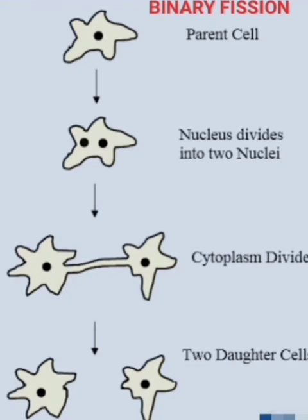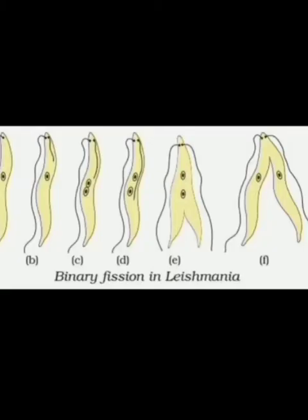But some unicellular organisms show somewhat more organization of their bodies. Let us take another example: Leishmania. It causes the disease Kala azar. It has a whip-like structure at one end of the cell, as you can see in the picture. In such organisms, binary fission occurs in a definite orientation and relation to these structures.